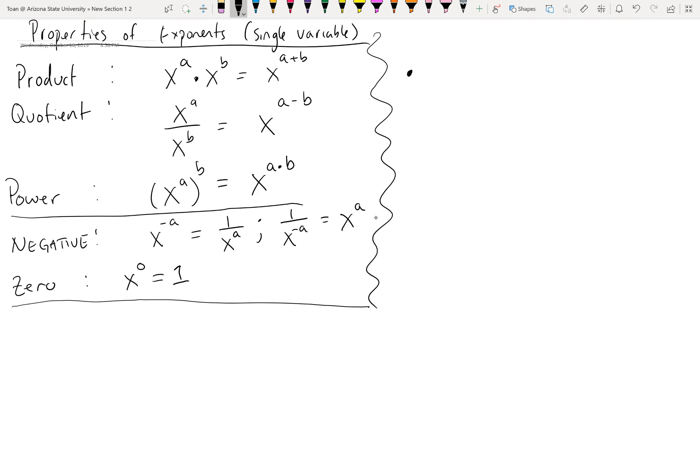My first suggestion when it comes to simplifying expressions using properties of exponents is to break down parentheses, and that's usually going to be using the power property.